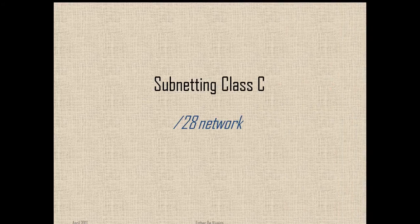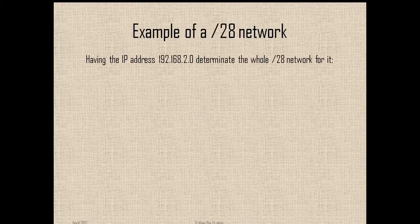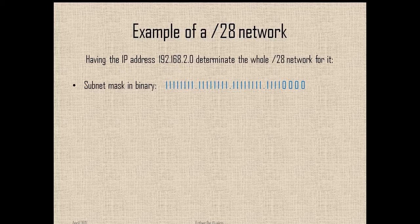So first we are going to check the slash 28 and we are going to do it through an example. We are going to find the network for the slash 28. So first we found the subnet mask in binary, which has 28 bits activated on the network portion and 4 remaining bits on the host portion.